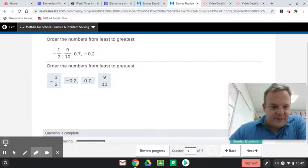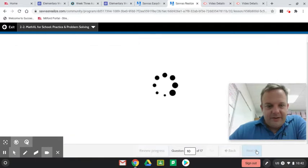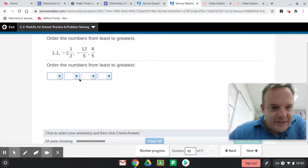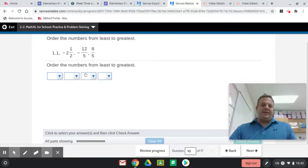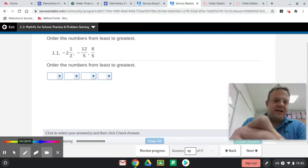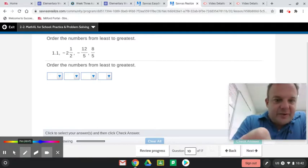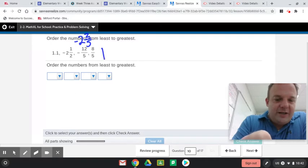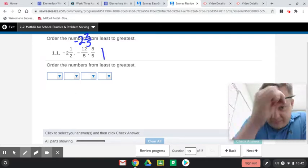I've got three minutes to finish this. Can we do it? What are these from least to greatest? So see that 12-fifths? Convert that into a mixed number. So that as a mixed number would be negative 2 and 2-fifths. And see that 8-fifths? That is positive 1 and 3-fifths.